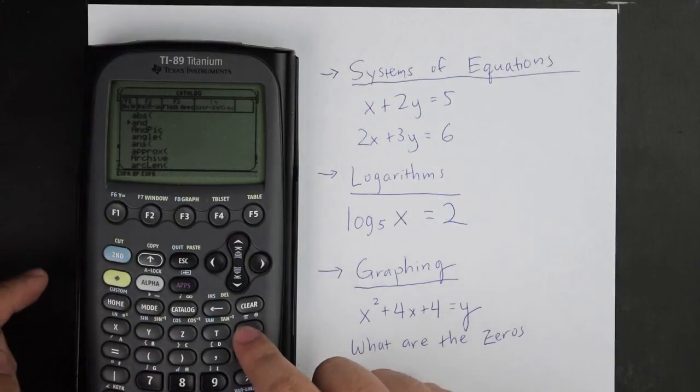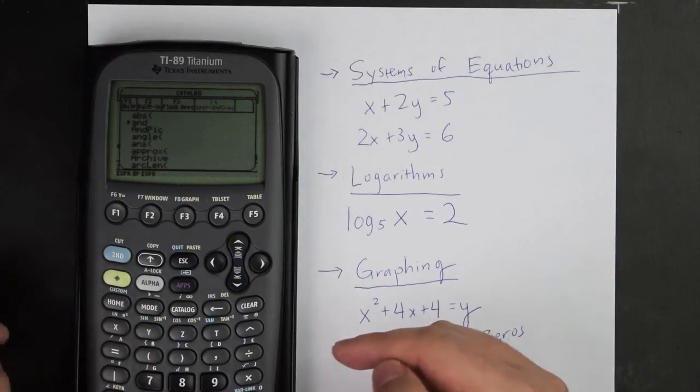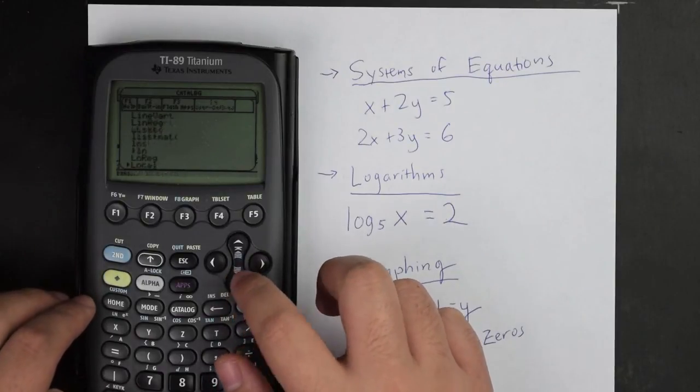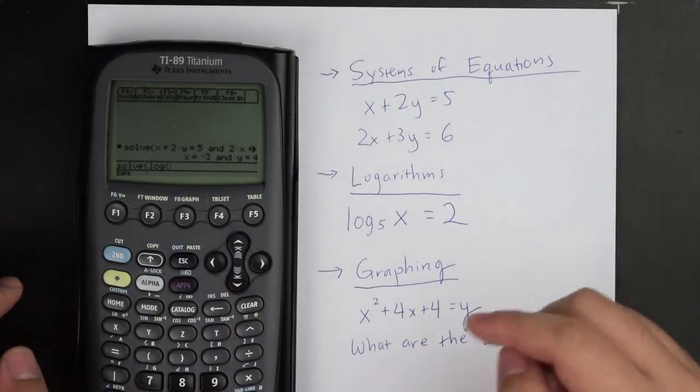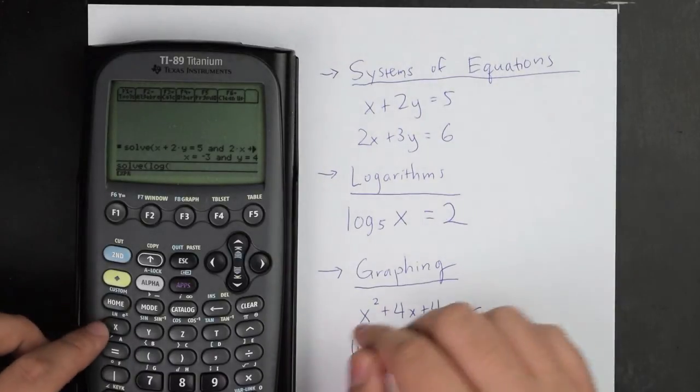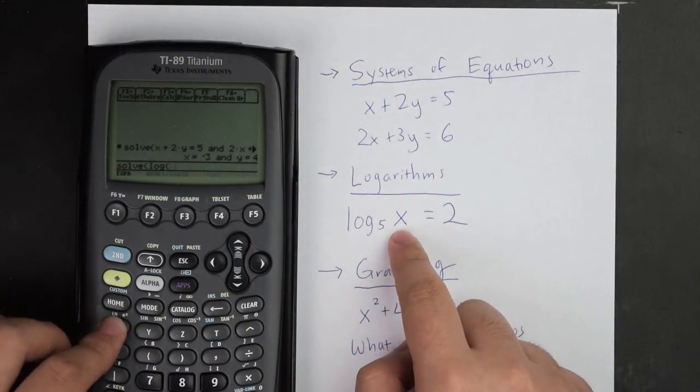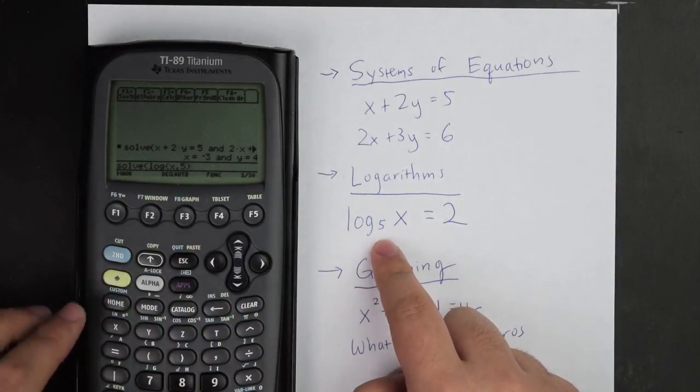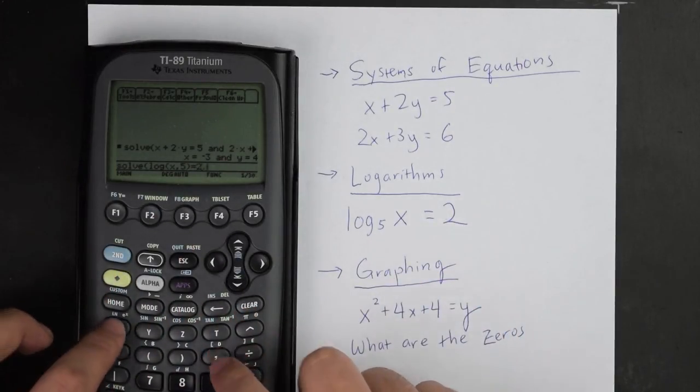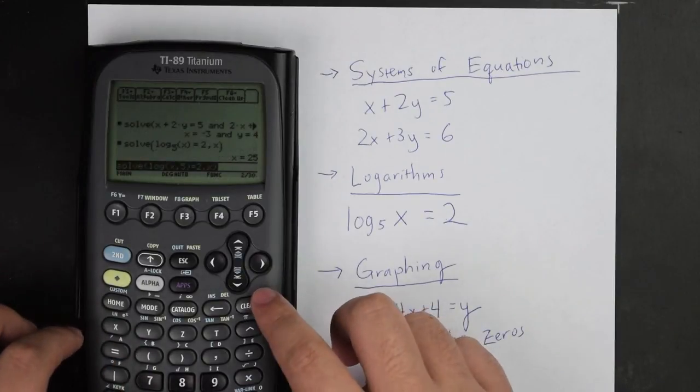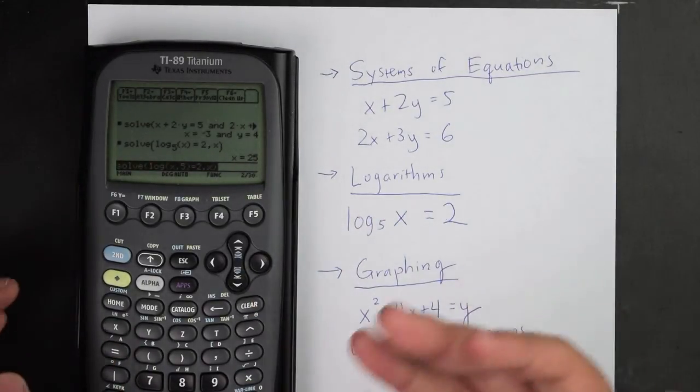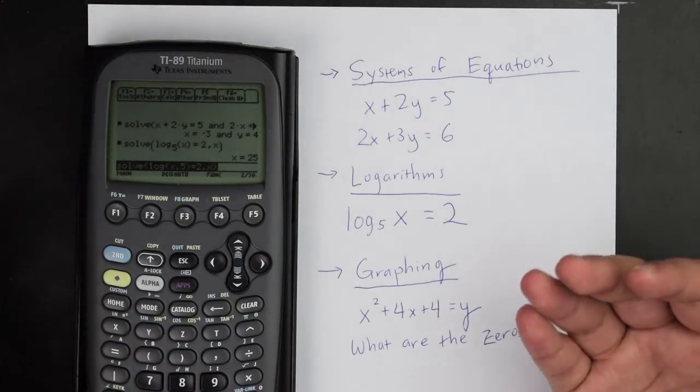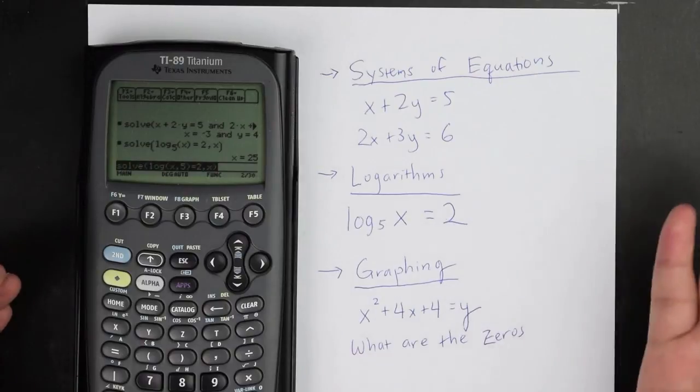Well, same thing. I could go to catalog. I could look for the letter L because it's logarithms. I could scroll down a little bit real quick, and I'll find it right here, logs. And how log function works on the TI-89 is I need to write the letter x first, comma 5, because that will indicate that that 5 will be the base value, equals 2, comma x. And it tells me x is equal to 25, which is the correct answer. And so that's one great thing about this calculator that exists, that the TI-84 cannot offer.